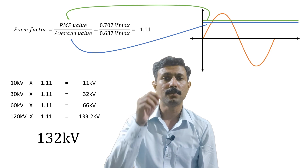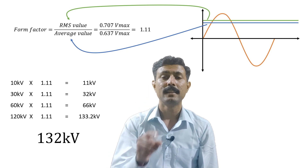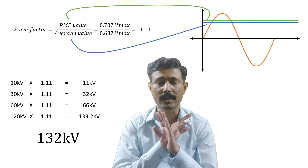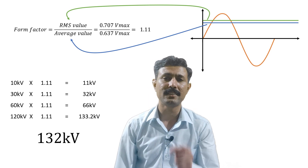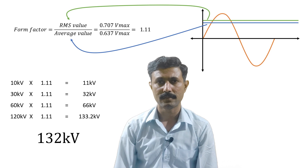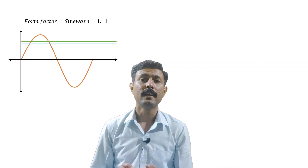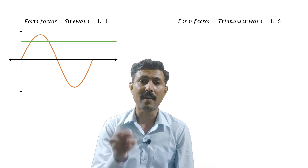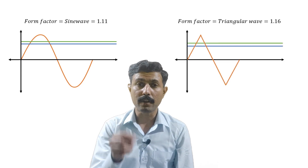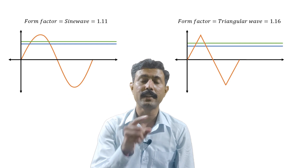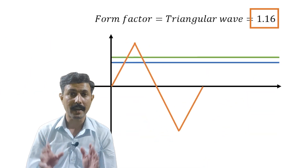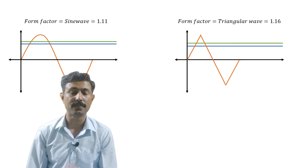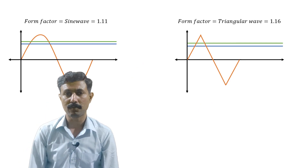So, clear this in your mind: the form factor is not at all useful in deciding the distribution or transmission voltage. Instead, the form factor is useful to identify whether a waveform is purely a sine wave or not. If the waveform is not a pure sine wave, then its form factor would not be 1.11. So this is not at all useful in deciding transmission voltage.